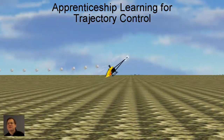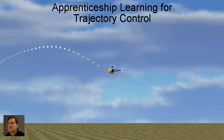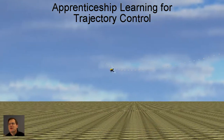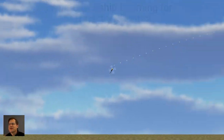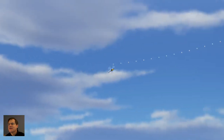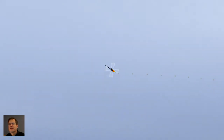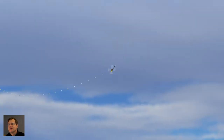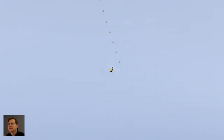This video introduces apprenticeship learning for trajectory control. We have two aircraft models: this RC helicopter and a 9,400-pound gross weight commercial helicopter. The chain of boxes you see show the future two seconds of the trajectory, and the aircraft controller tracks to this path.